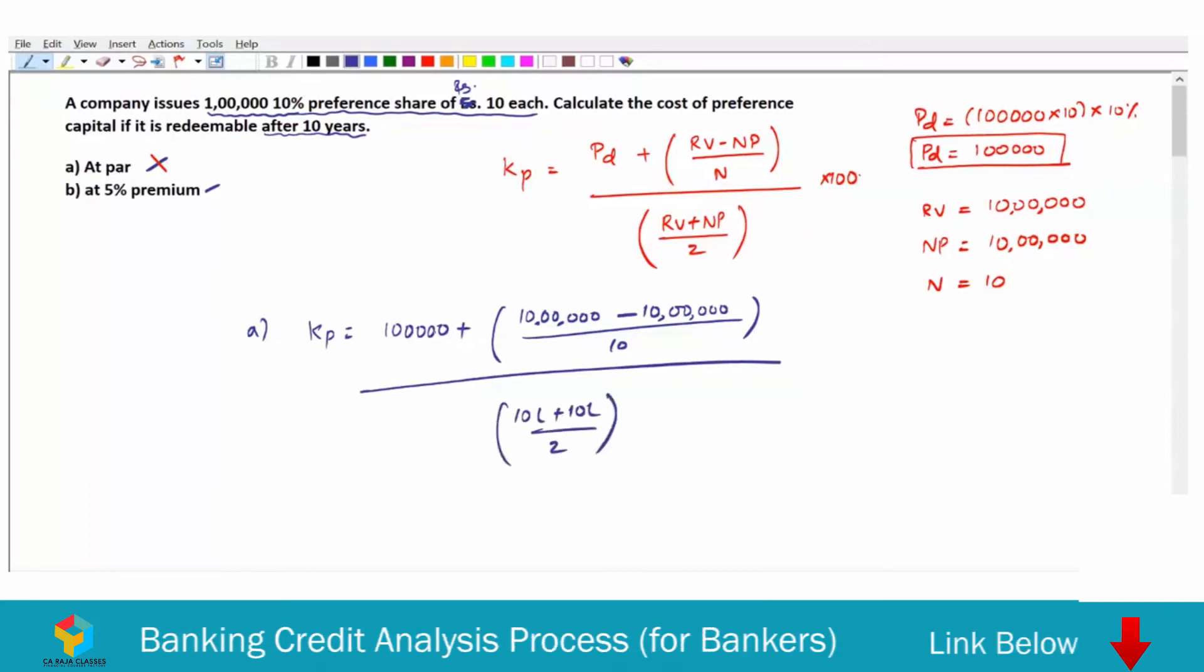So that is 10,00,000. So you get 1,00,000 divided by 10,00,000. Kp is equal to 1,00,000 divided by 10,00,000, which is 0.1 multiplied by 100. So that you can express it in percentage. It is 10 percentage. This is the case when the redemption is at par.